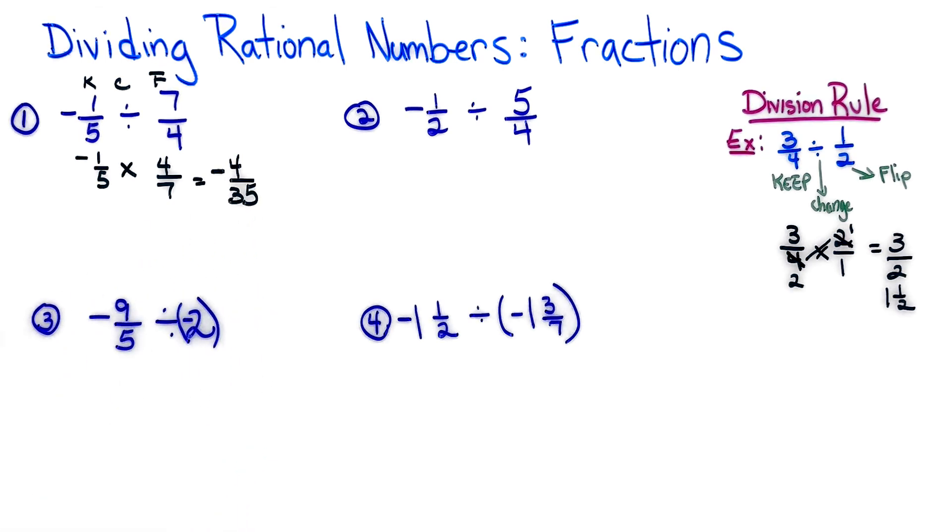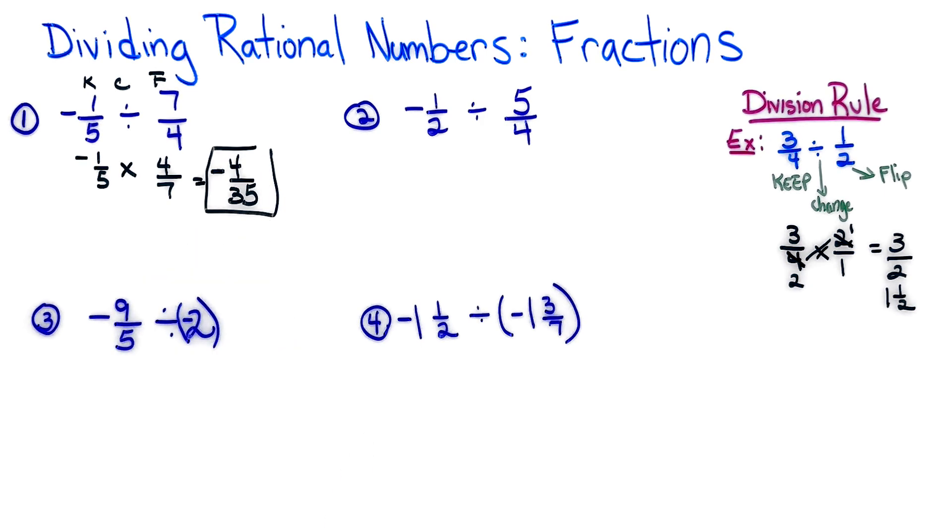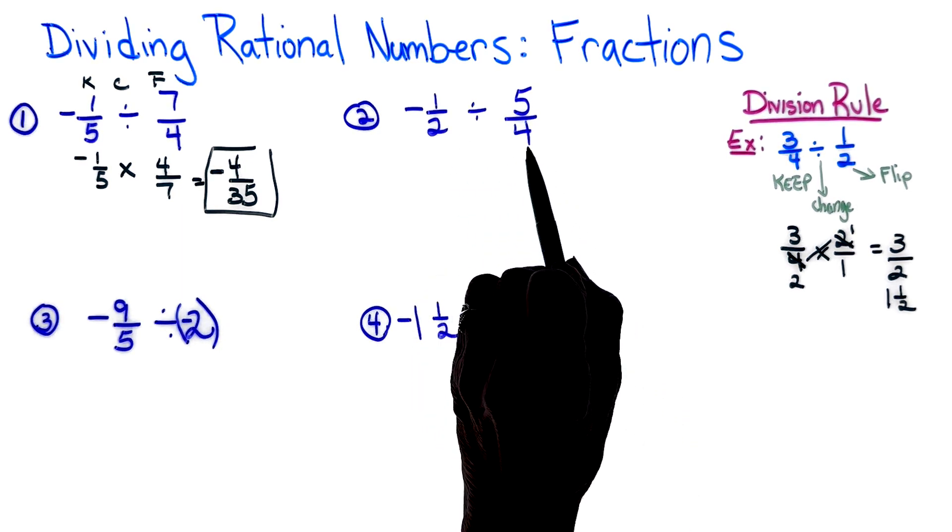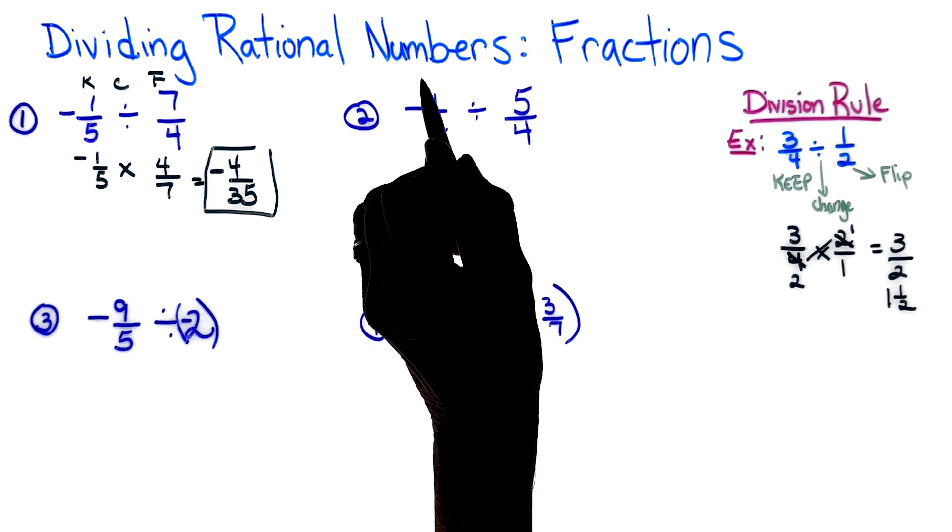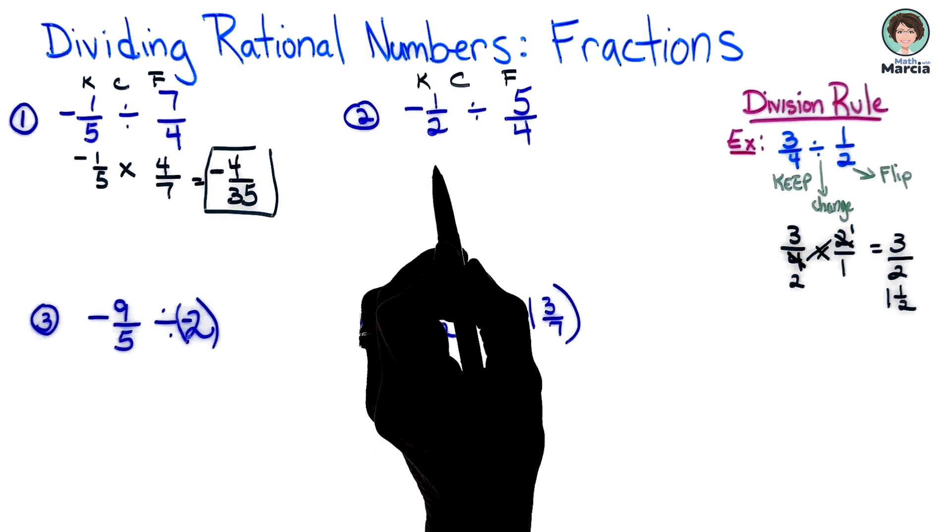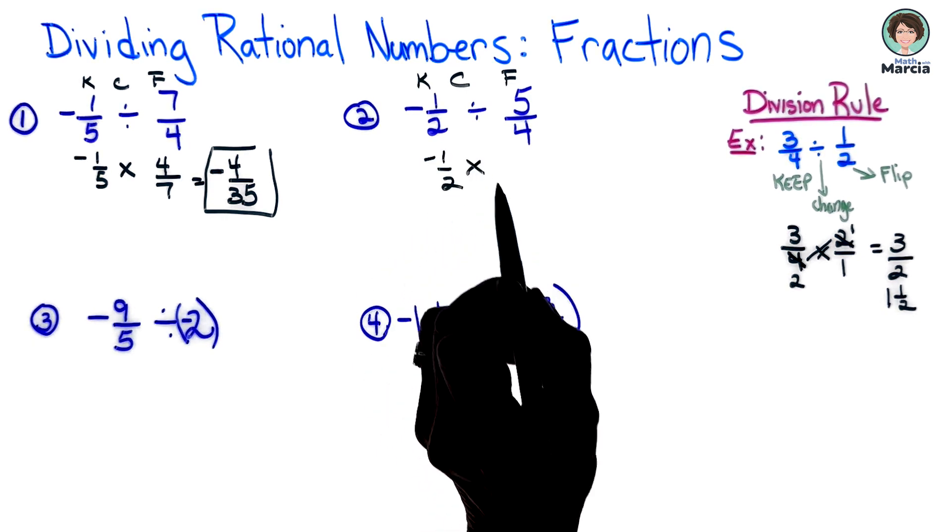All right, going to the next one. Again I have a negative and I have a positive, so I know my answer is going to be negative. Let's write KCF so we remember what to do. So I am keeping my 1/2, changing the sign to multiplication, and writing the reciprocal when I flip.